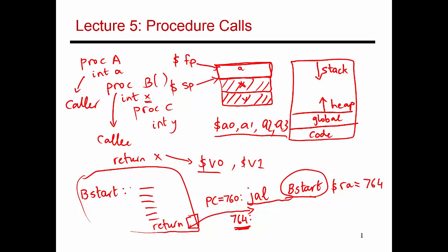On a jump and link, you know you have to return back to the next instruction at 764. What jump and link does is transfer control to BSTART, and there's a special register in the register file referred to as the return address register $RA, which is populated with the instruction you should return to. So $RA is going to have the value 764. When you execute a jump and link, the contents of PC incremented by four get transferred to $RA, and then the PC gets set to the jump target — so the PC becomes, say, 1064. The next instruction to execute is at 1064, 1068, and so on.